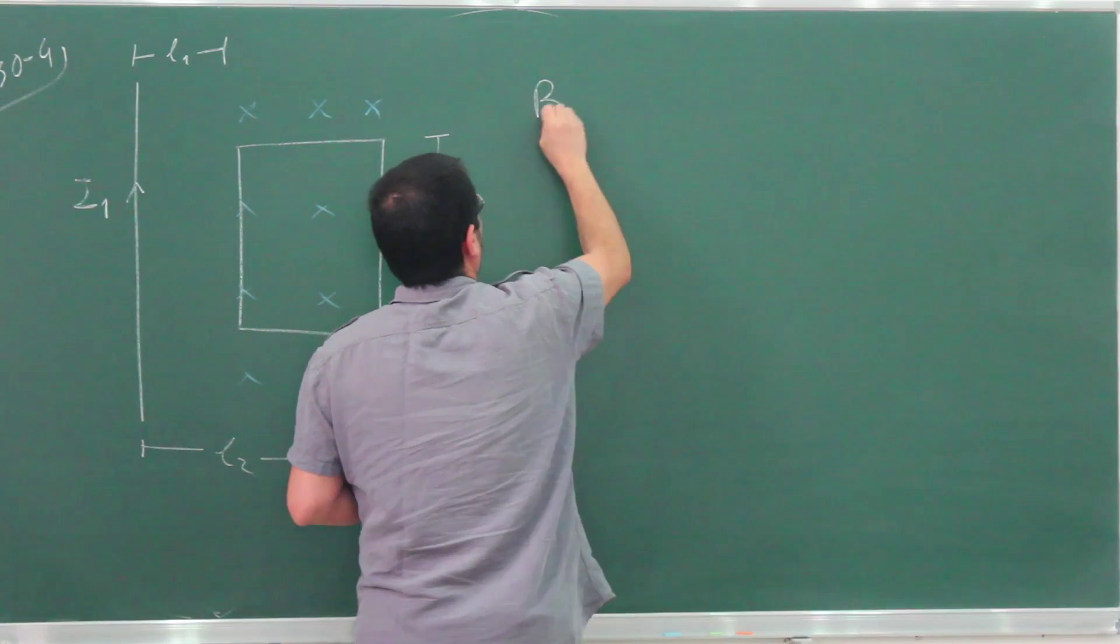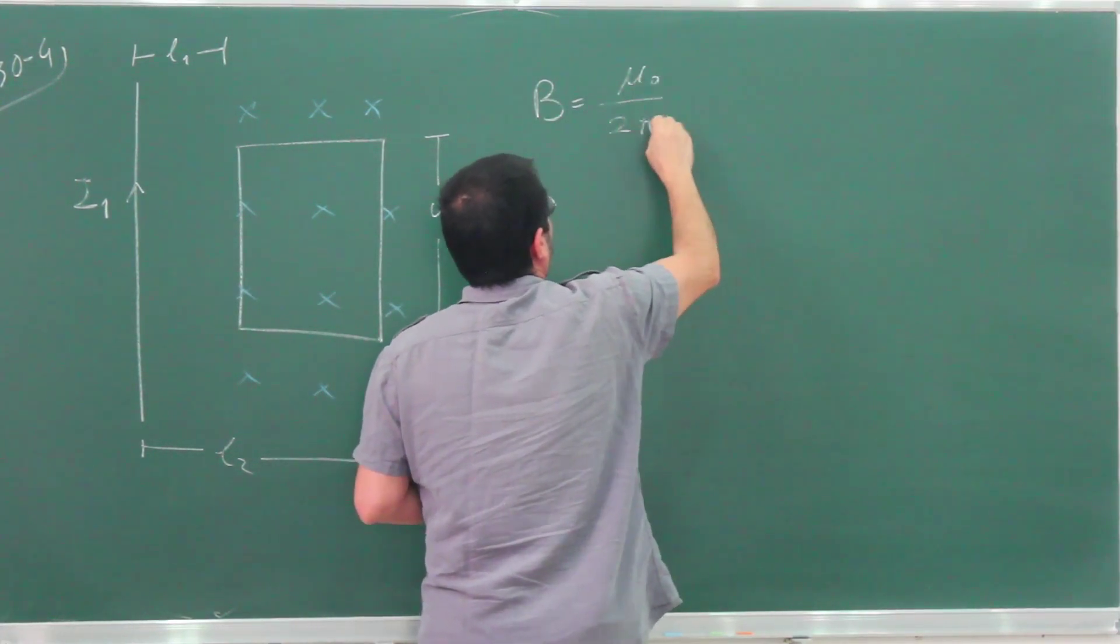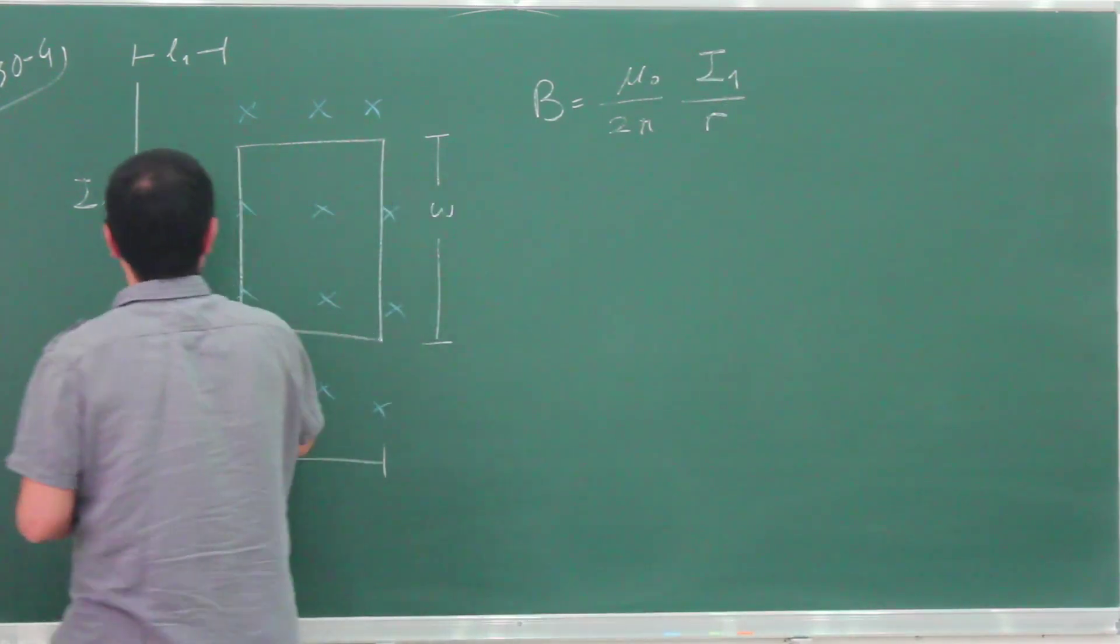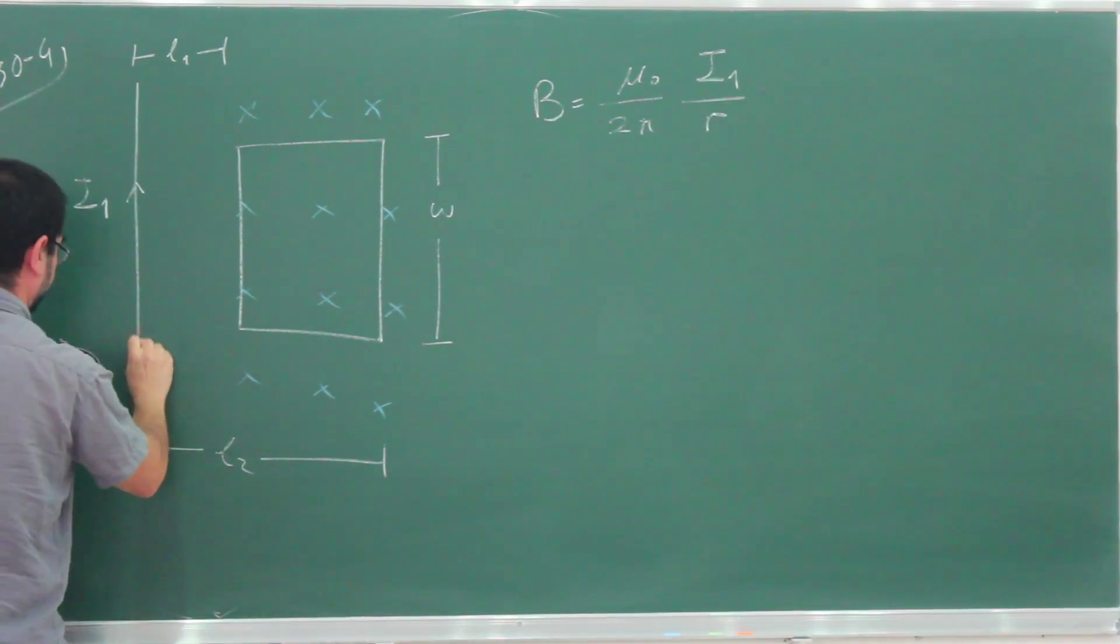So the magnitude of the magnetic field is going to be given by μ₀ over 2π times i1 over r, where r is this distance. Let me choose a coordinate system here - this is r, starting here, and I'm going to measure it this way.